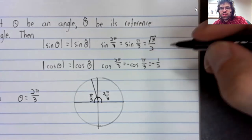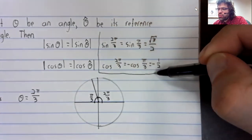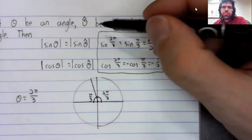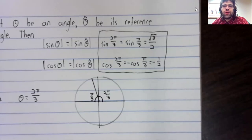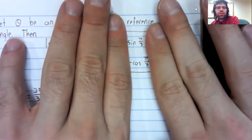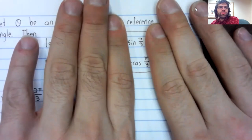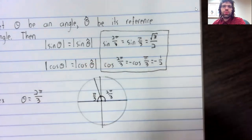And you can use reference angles sometimes to find the sine and the cosine of angles whose sine and cosine you have not committed to memory. These are the sine and the cosine you committed to memory, and we were able to use them to find this sine and this cosine.